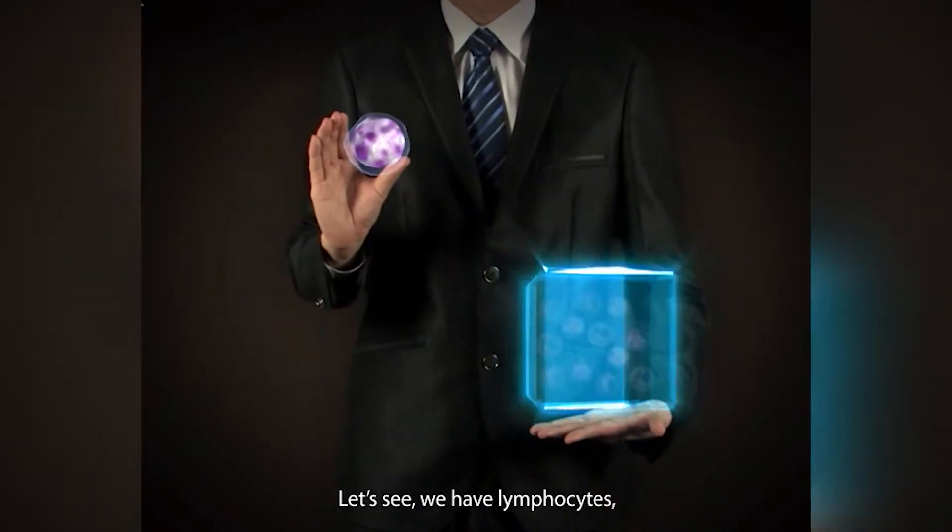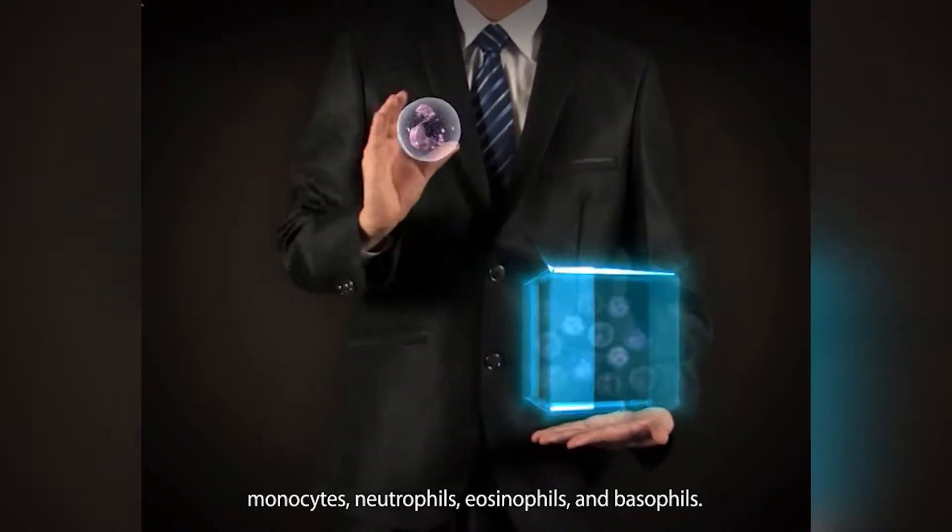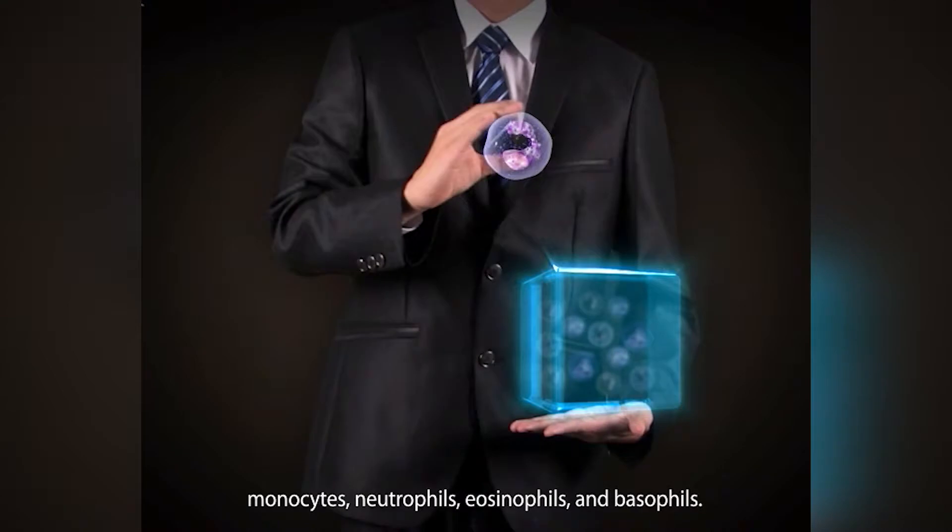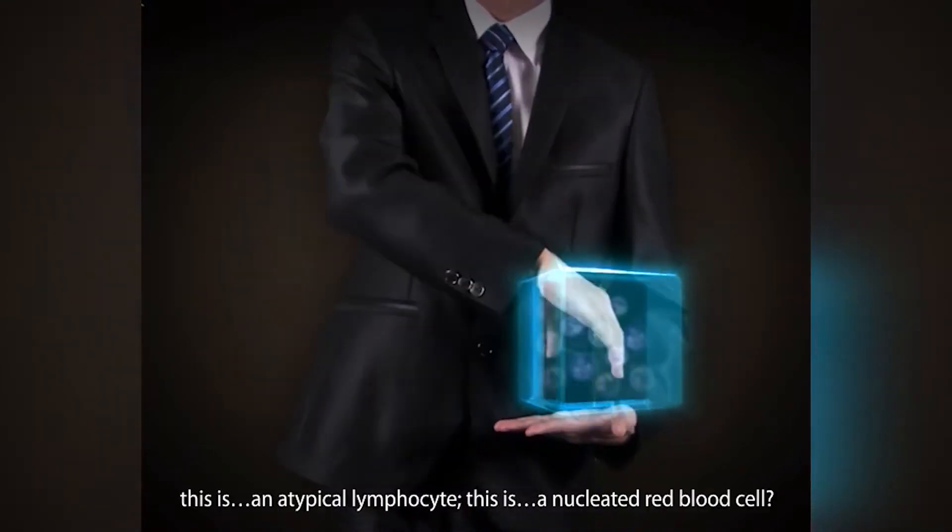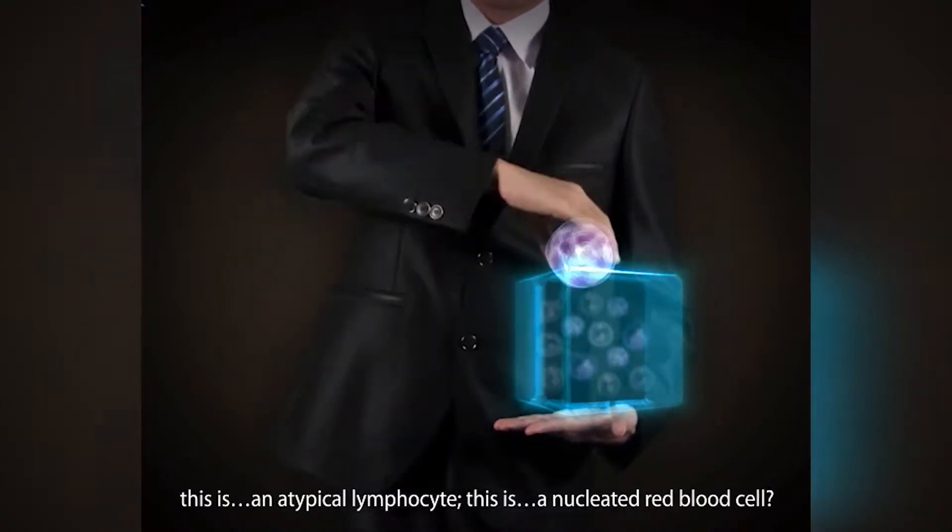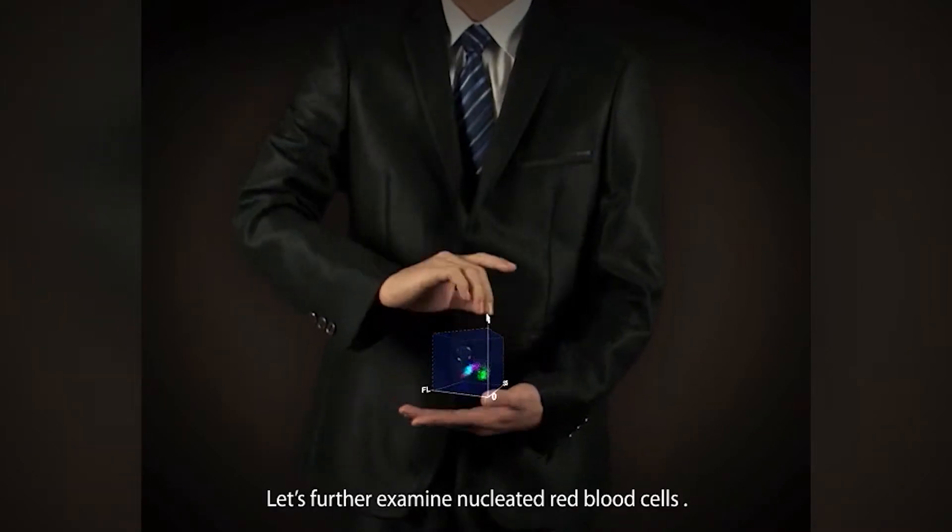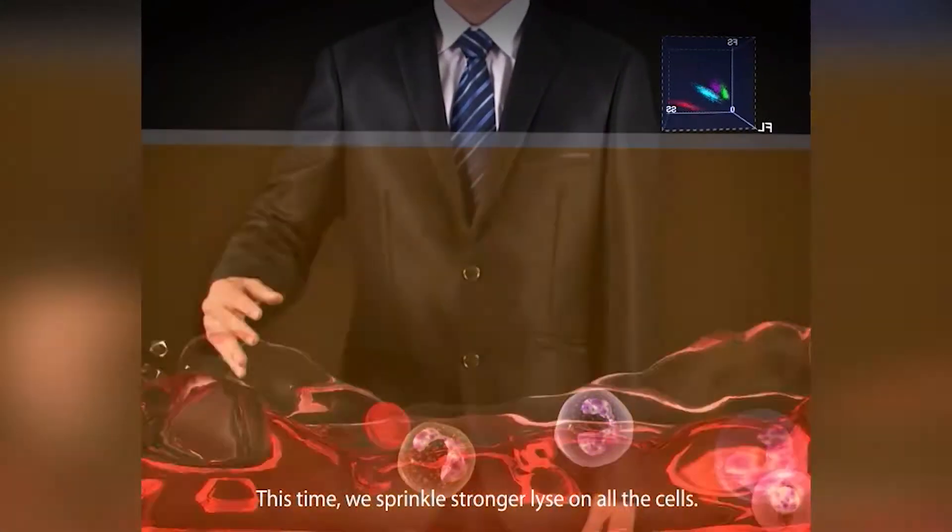Let's see. We have lymphocytes, monocytes, neutrophils, eosinophils, and basophils. Oh, what are these? This is an immature cell, this is an atypical lymphocyte, this is a nucleated red blood cell. Let's further examine nucleated red blood cells.